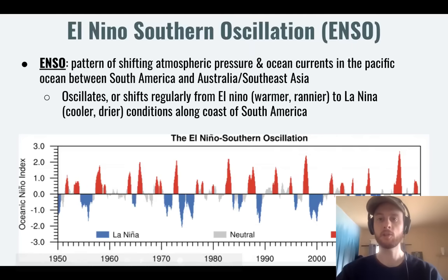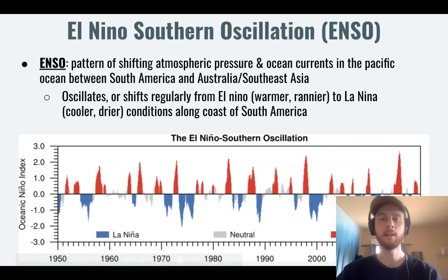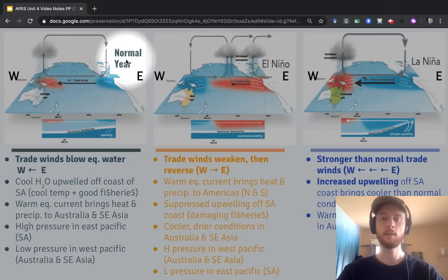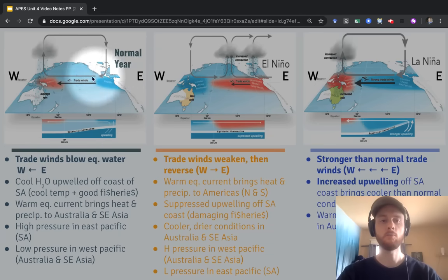Now with the basics of global ocean circulation down, we can move on to ENSO, or the El Niño Southern Oscillation. There's a tendency to simplify this into just an El Niño or La Niña event or normal conditions, but it's called the Southern Oscillation for a reason. As we can see in the graph, what we really have is a constant fluctuation between El Niño conditions, which bring warmer, rainier conditions to South America, and La Niña conditions, which bring cooler, drier conditions. These events don't usually just happen in one year — they might peak in a given year but grow and weaken over the course of a few years. During a normal year, trade winds blow from east to west in the equatorial region, moving warm ocean surface water towards the west.